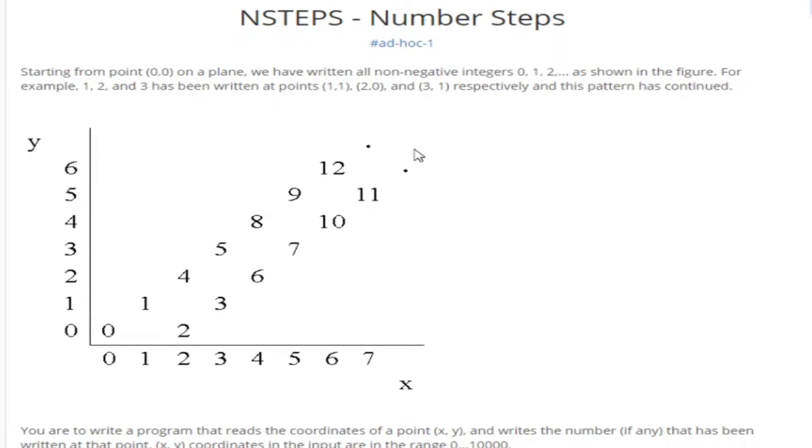So basically this problem is starting from 0,0 on a plane. You write all the non-negative numbers 0, 1, 2 shown in the figure, and then this pattern basically continues.